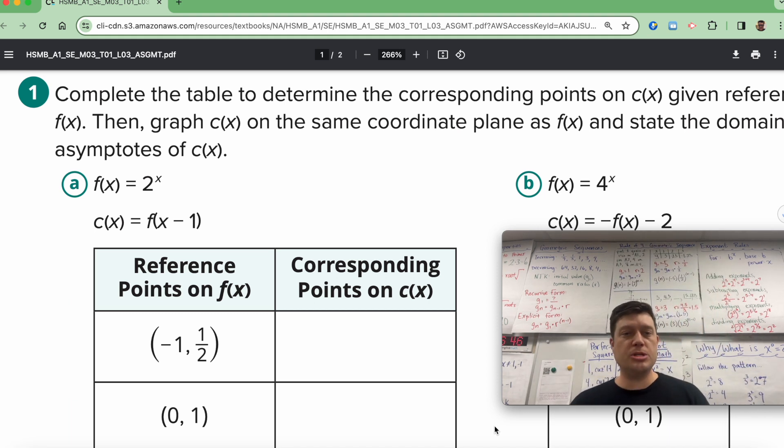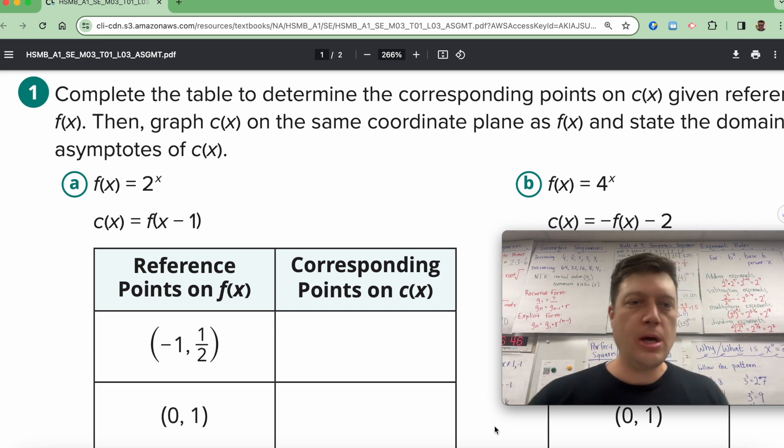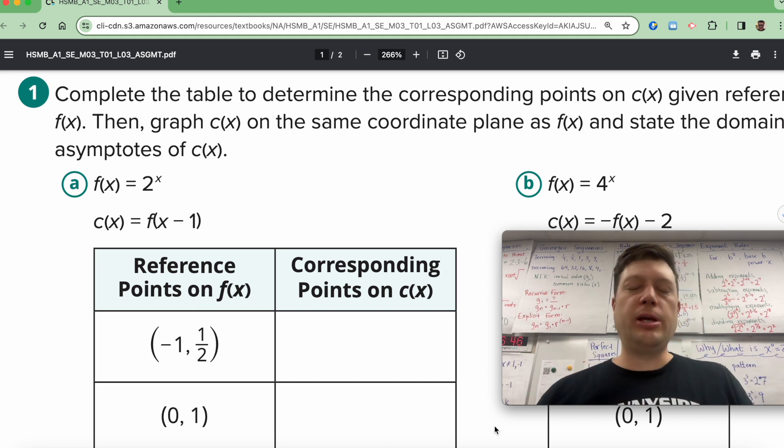Here we have a table of values and we have some what we call reference points for a function. And these are two examples of exponential functions because the X is the exponent and we're going to do some sort of transformation. And so maybe we don't specifically answer this question, maybe we do, but I'm going to show you what each of the transformations does. And honestly, at this point, after talking about absolute value functions and talking about linear, like Y equals MX plus B, but in their different form functions, this should all feel very familiar. It should be very fluid to what you've learned in the past.